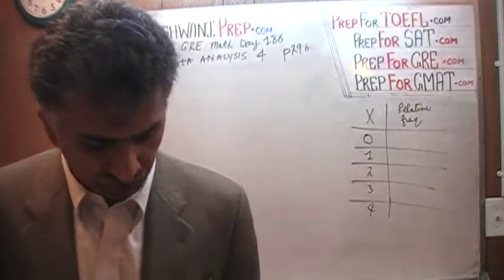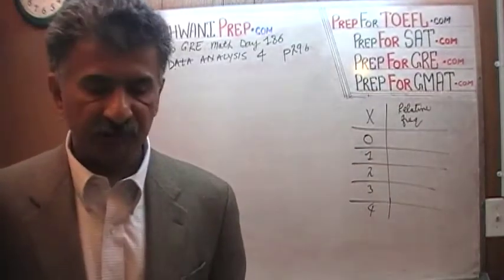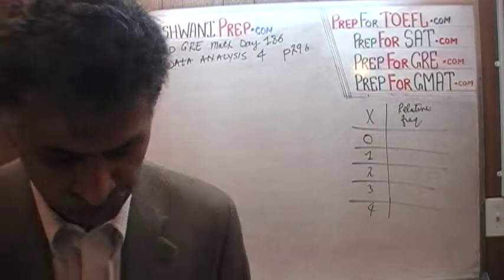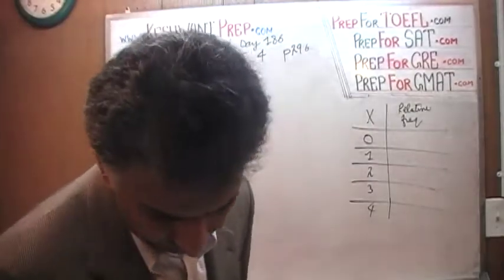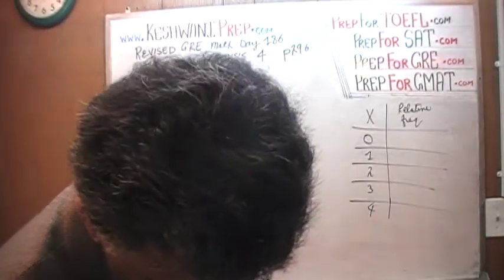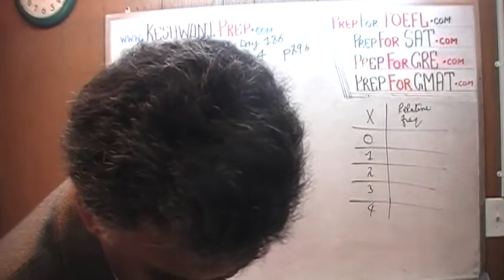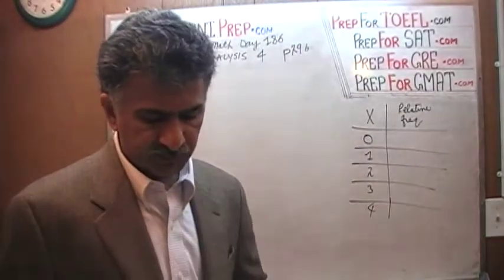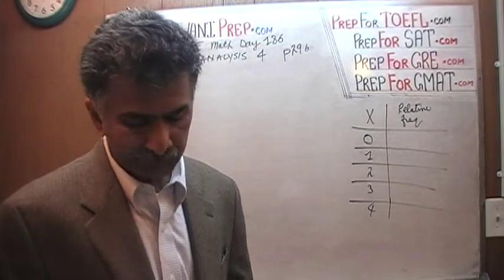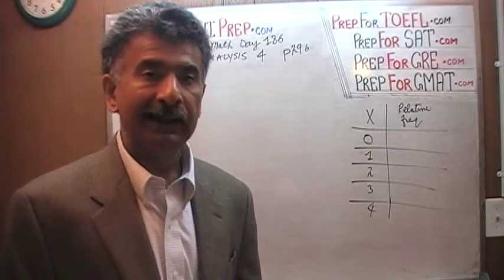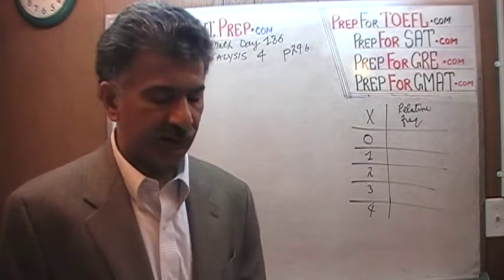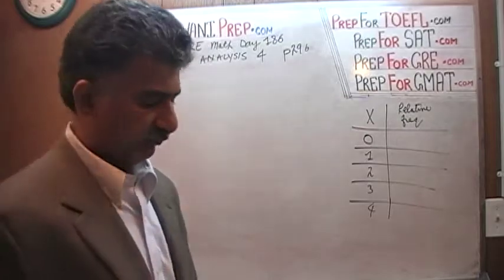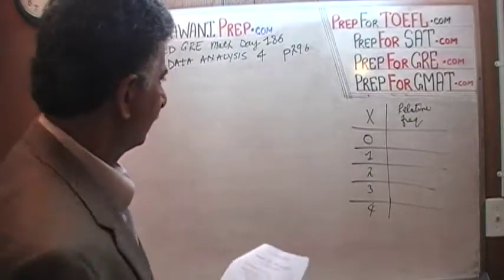Turn to page 296, the very last problem on that page. They give you a relative frequency chart, and the question simply is: they want us to find the mean and the median of this variable X. So let's find it.